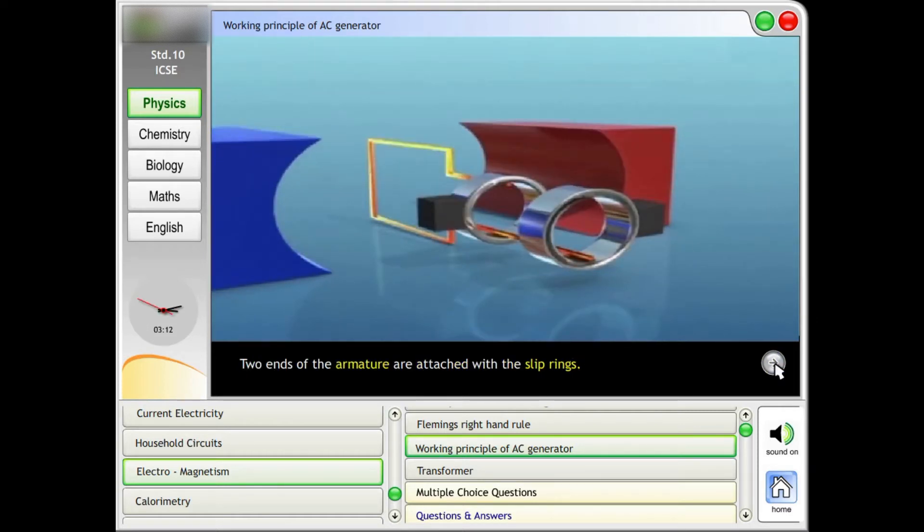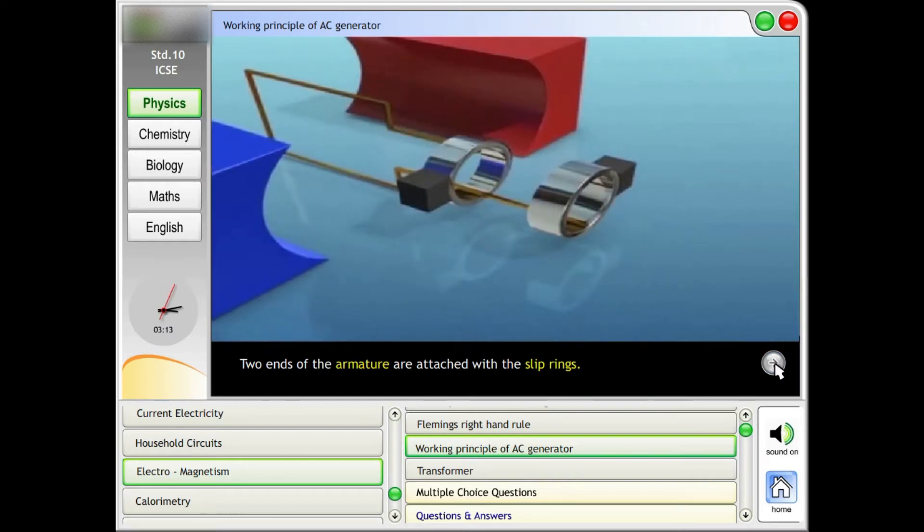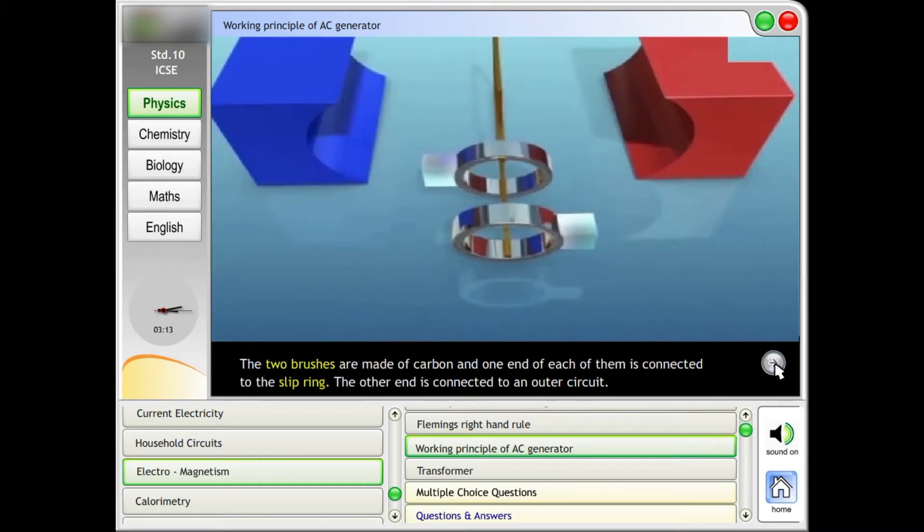Two ends of the armature are attached with the slip rings. The two brushes are made of carbon and one end of each of them is connected to the slip ring. The other end is connected to an outer circuit.